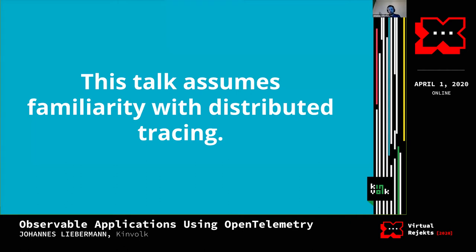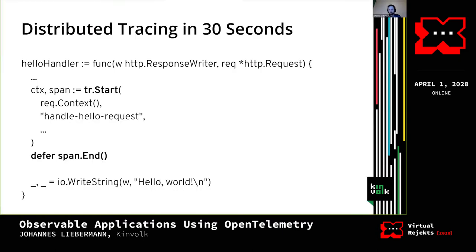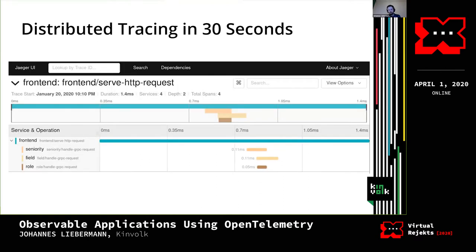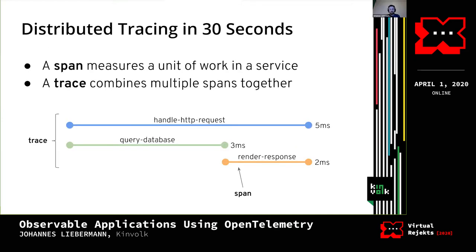This talk assumes you know what distributed tracing is, but just in case, here it is in 30 seconds. You instrument your services by importing a tracing library. The library collects data about what's going on in your code. That data gets shipped to a tracing backend, giving you graphs that provide both low-level and end-to-end views of every request across all services involved. A span measures a unit of work within a service, and a trace is a collection of spans with parent-child relationships.